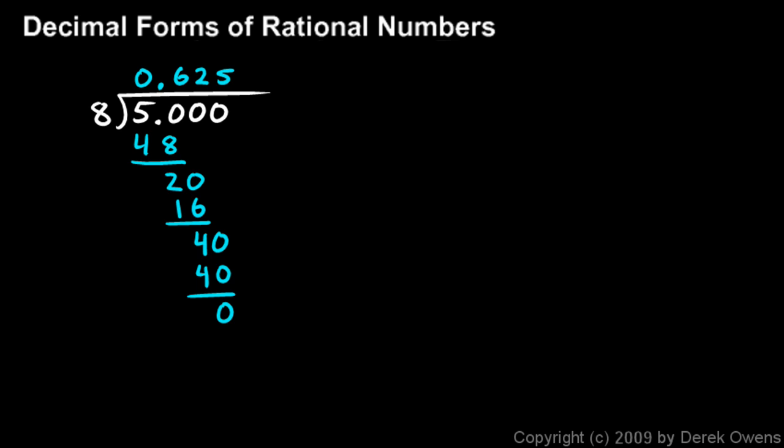If you end up with no remainder, the decimals have stopped, that's what we call a terminating decimal, and that's our exact answer, 0.625.